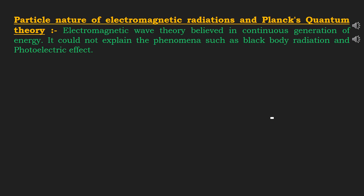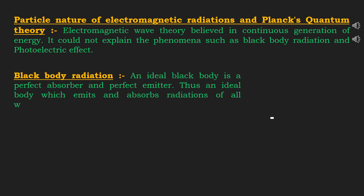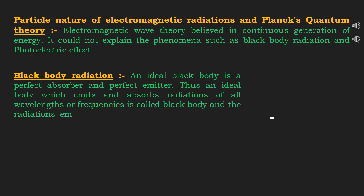First of all let's discuss black body radiation. An ideal black body is a perfect absorber and perfect emitter. Thus, an ideal body which emits and absorbs radiations of all wavelengths or frequencies is called a black body, and the radiations emitted by this body are called black body radiations.